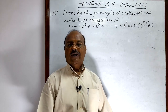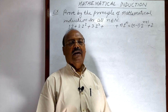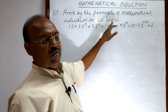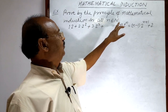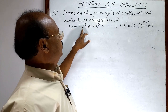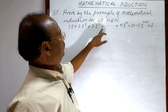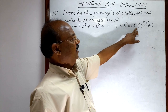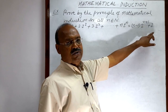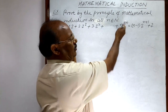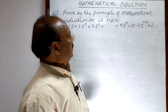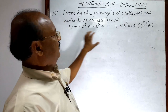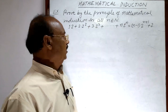Welcome students. Let us see a very interesting and important question from the chapter mathematical induction. The question is: prove by the principle of mathematical induction for all n belonging to the set of natural numbers N. The statement is 1·2 + 2·2² + 3·2³ + ... + n·2ⁿ. This is the mathematical statement denoted by P(n). Let us see the solution.